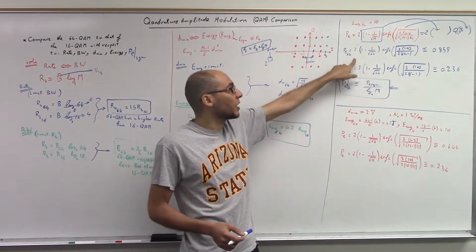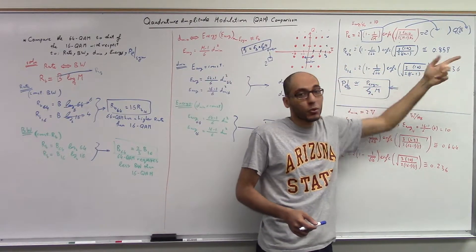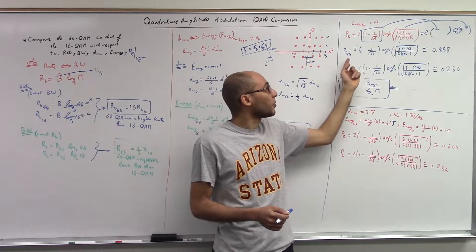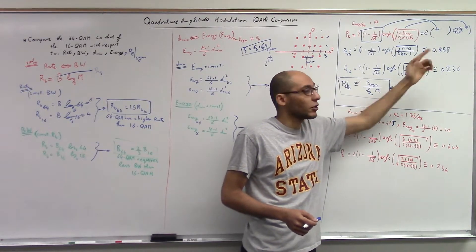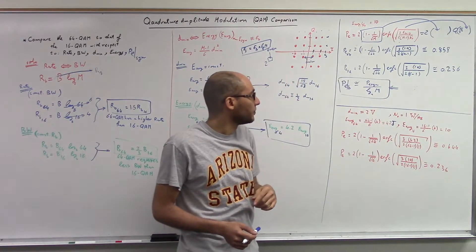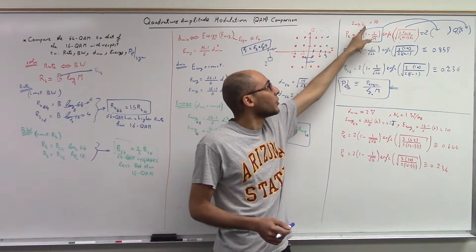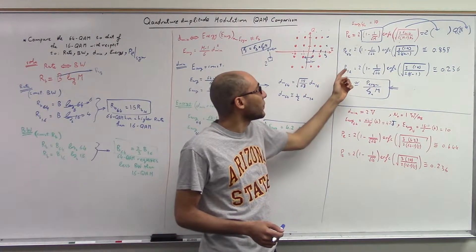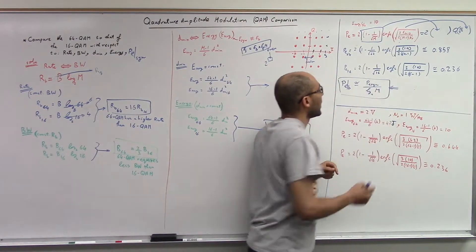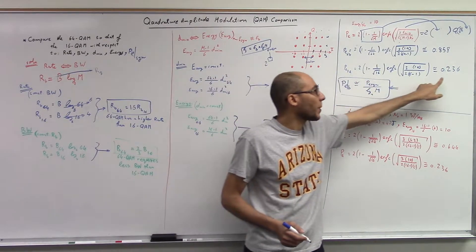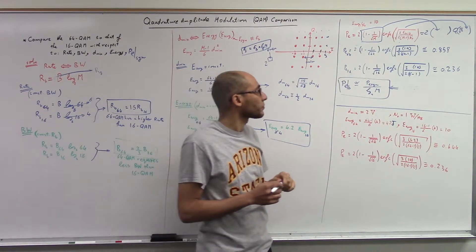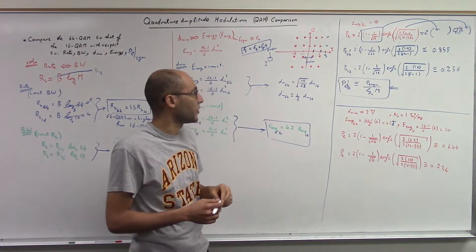You might wonder why we ended up with a symbol error probability higher than half, since error probability shouldn't exceed half. But this is symbol error probability, not bit error probability. On average, 85% of the transmitted symbols could be decoded incorrectly. The reason is that the average energy per symbol over N0 is quite small. If you decrease the constellation size while fixing the energy, you get a smaller symbol error rate, though at the expense of bit rate.